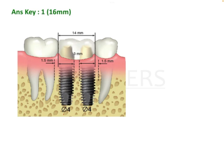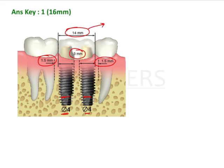This image is taken from Misch, which is the gold standard textbook for implantology currently. Here they explain the same concept using 4mm diameter implants: 3mm inter-implant distance and 1.5mm between tooth and implant on each side. So the total space for two 4mm implants would be 14mm.